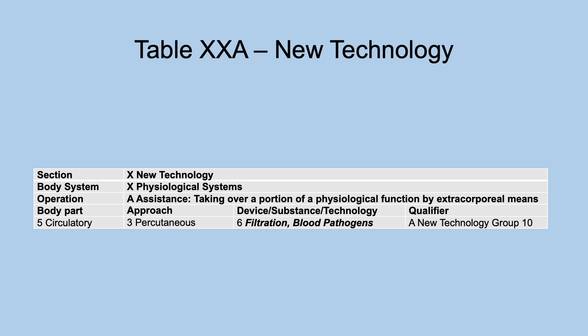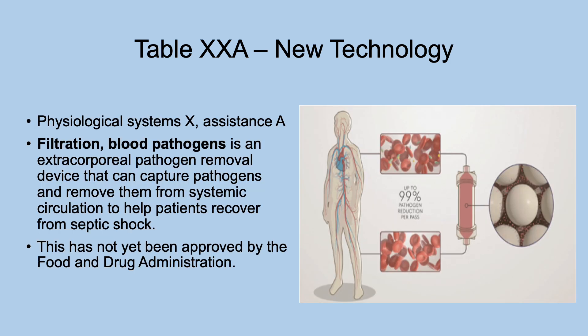Table XXA, new technology physiological systems assistance — filtration, blood pathogens. This is an extracorporeal pathogen removal device that can capture pathogens and remove them from systemic circulation to help patients recover from septic shock. It takes the blood out, filters it, and puts it back into the body. This has not yet been approved.